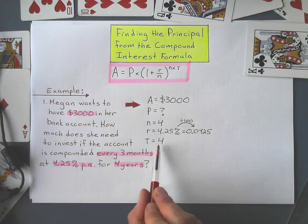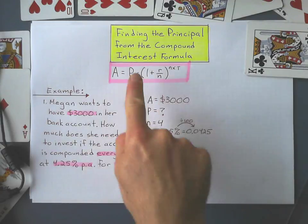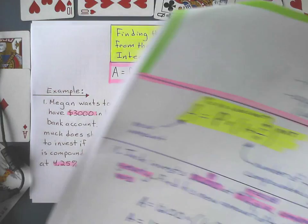And she's going to leave it in there for 4 years, so t equals 4. And remember, all of these variables are defined by the previous notes here.